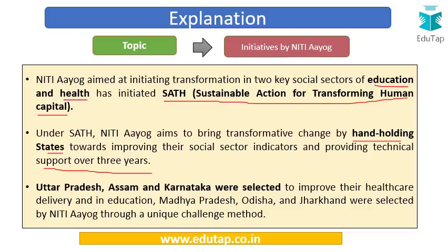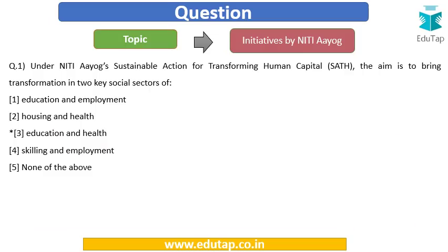Uttar Pradesh, Assam, and Karnataka were selected to improve their healthcare delivery. On the education front, Madhya Pradesh, Odisha, and Jharkhand were selected by NITI Aayog through a unique challenge method. So the SATH initiative targets education and health, making the answer option number three.